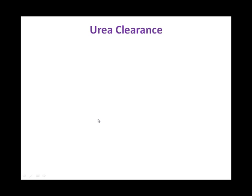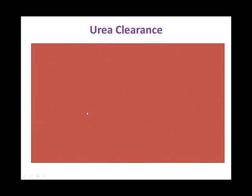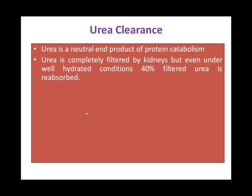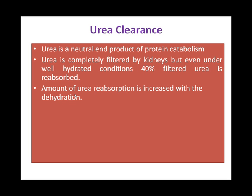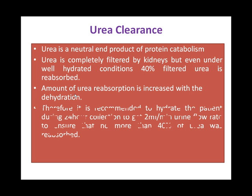Urea clearance: Urea is a neutral end product of protein catabolism. Urea is completely filtered by the kidneys, but even under well-hydrated conditions, 40% of filtered urea is reabsorbed. The amount of urea reabsorption increases with dehydration. Urea is passively reabsorbed by the proximal convoluted tubule and the ascending loop of Henle.